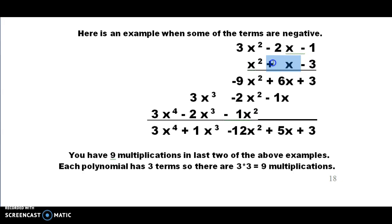Then I take my next term which is a positive 1x and I multiply that by every term on the top row. So positive 1x times negative 1 gives me minus 1x and I line it up underneath the 6x. I take x times negative 2x which is going to be negative 2x squared, and then the last multiplication I do is 1x times 3x squared which gives me 3x to the third.